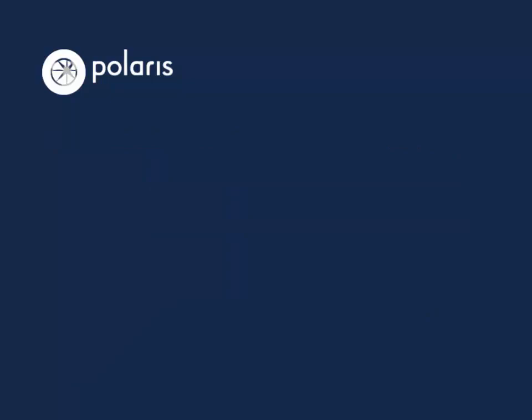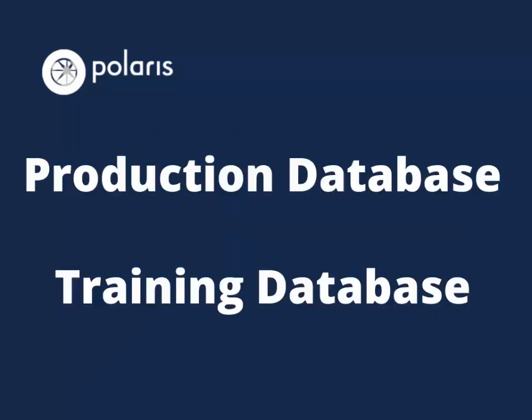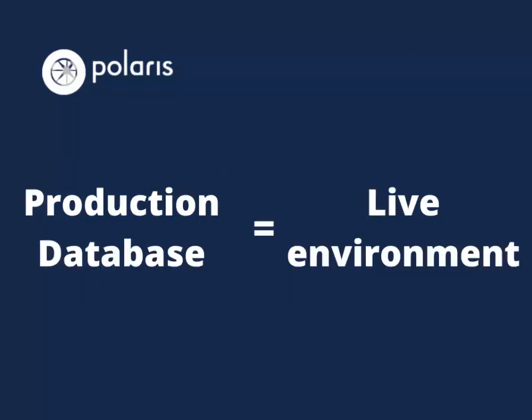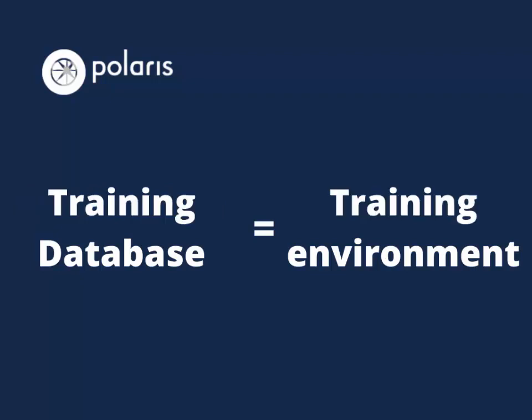In addition to these tools, you will also hear the terms production database and training database. You have access to two different versions of the Polaris database. One is the production database, or the live database — this is the version you will be using when working with patrons at your library. You also have access to a training database, or a training version of Polaris, which staff can access if they need an environment for training or testing. This version is not live, meaning any activity including checkouts, check-ins, or updates to records are not reflected in a patron's actual account.